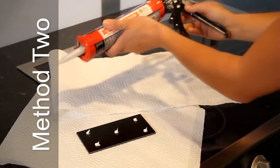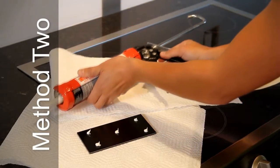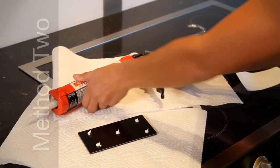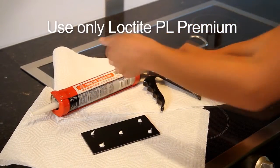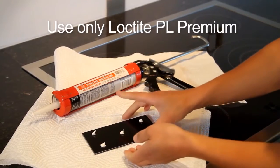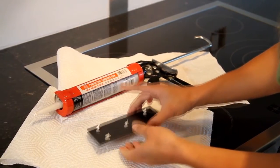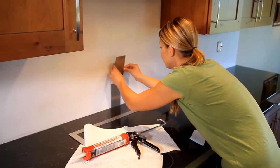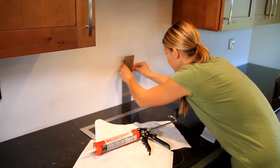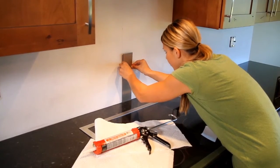If using method two, remove the release film on the back of each tile before applying additional adhesive. Apply about five pea-sized dots of adhesive to the back of a full tile. Keep the adhesive about a half inch from the tile edges to prevent leakage. Press the tiles into place. If adhesive squeezes out around the tiles, be sure to wipe it off before it dries.